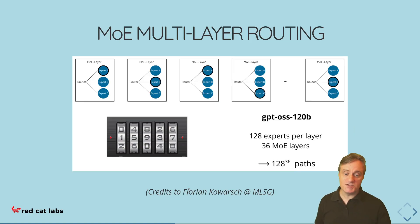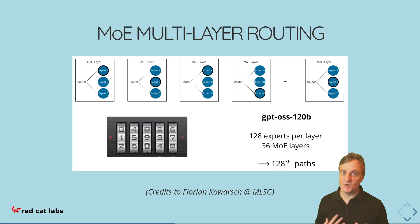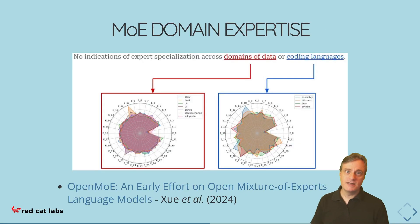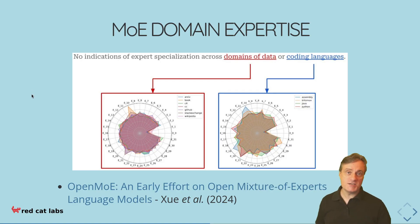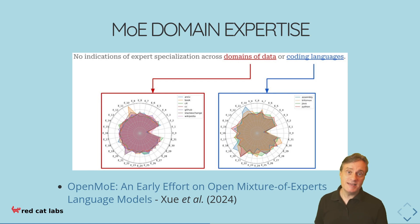I want to give credit to Florian Kowach, who presented a lot of these slides at our recent Machine Learning Singapore meetup — I'm borrowing his slides, but all mistakes are mine. So what do these experts actually do? From a human point of view, you might think that if I have a coding problem I would have a coding expert, and if I have a poetry problem I would have a poetry expert. But what people actually find when they look at how the experts are activated for a particular topic is that it's actually far more even across different topics and different experts — which is a bit unintuitive.